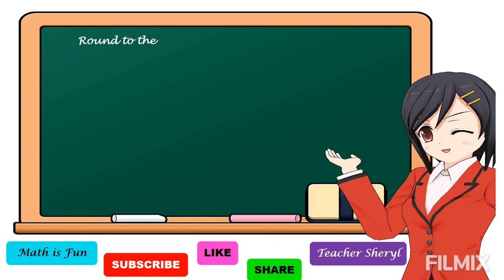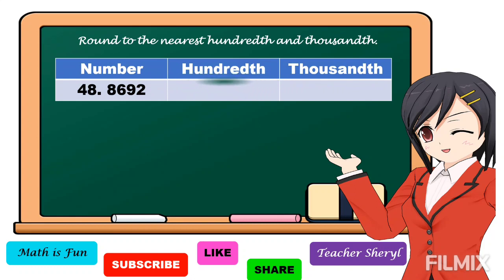To answer our problem, we are going to round it off to the nearest hundredths and thousandths. In rounding decimal numbers, just like in rounding whole numbers, first we're going to look at the rounding digit. If we're going to round it off to the nearest hundredths, we're going to find the hundredths digit. So this is tens, hundreds — the rounding digit is 6.